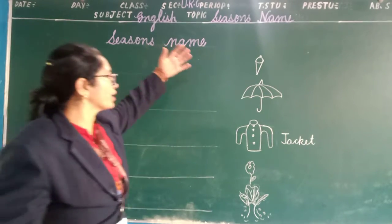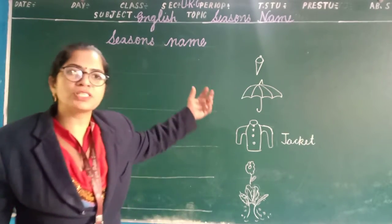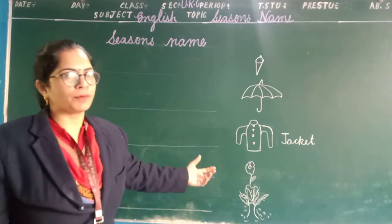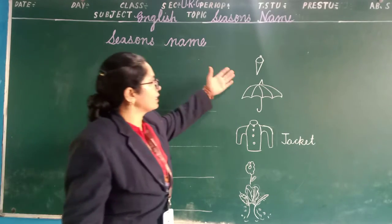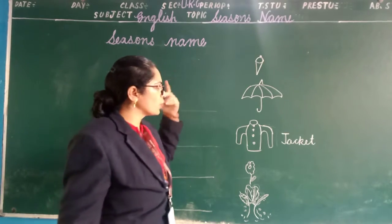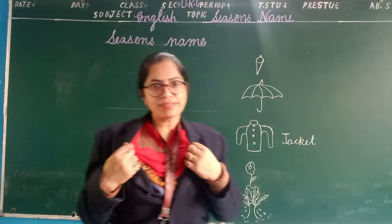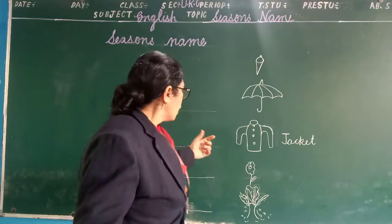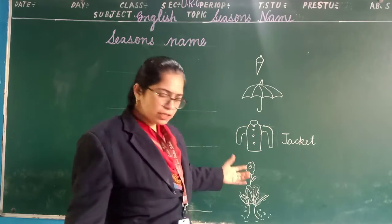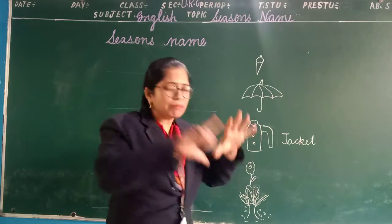So today you are looking at some pictures on the board. Aapkut pictures dekhde ho board pe. Ice cream, umbrella, a jacket, flower, and last meh tree.